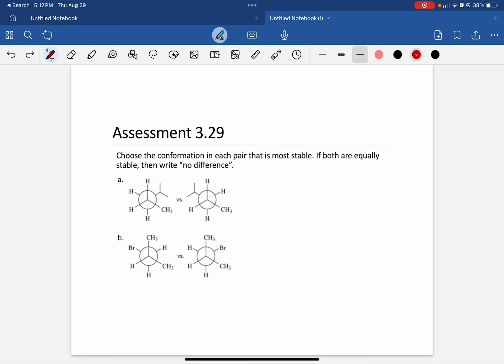Assessment 3.29 asks us to choose which of the two conformations is most stable, and if there's nothing different between the two, then write no difference.